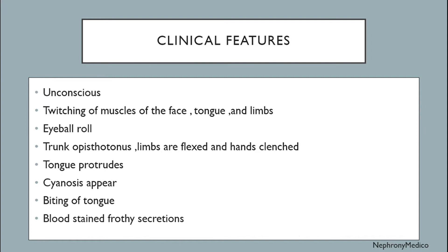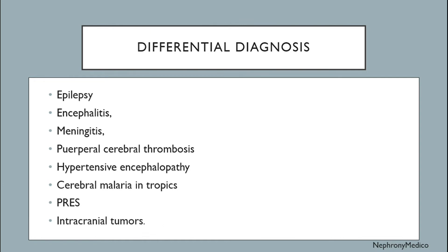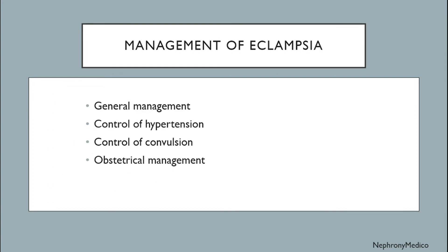Additional clinical features include blood-stained secretions. Differential diagnosis includes epilepsy, encephalitis, meningitis, cerebral thrombosis, hypertensive encephalopathy, cerebral malaria in the tropics, PRES, and intracranial tumors.